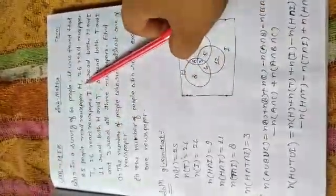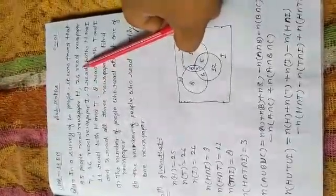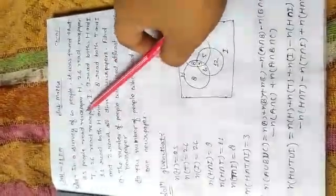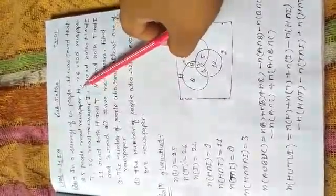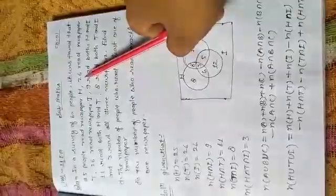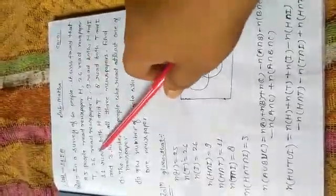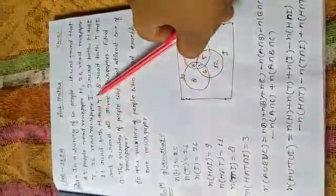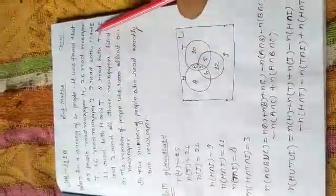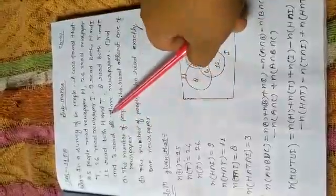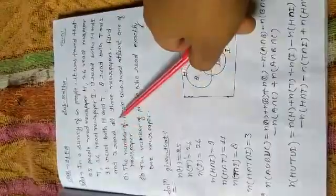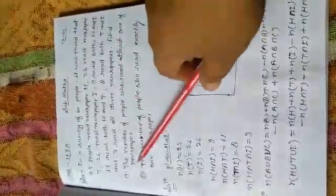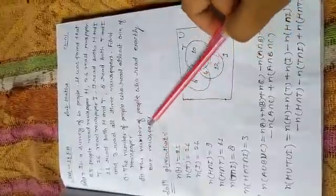26 read newspaper H, 26 read newspaper T, and 26 read newspaper I. 9 read both H and I, 11 read both H and T, and 8 read both T and I, and 3 read all three newspapers. Find first, the number of people who read at least one newspaper, and second, the number of people who read exactly one newspaper.